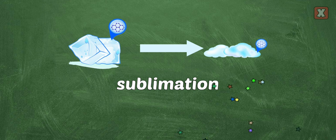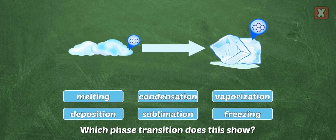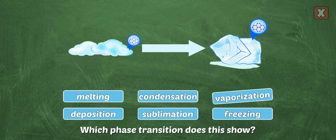Sublimation is a special change of state where a solid moves directly into the gas phase. Which beaker contains a gas?